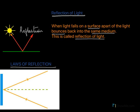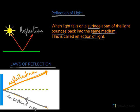The incident ray is the ray that comes in and hits the surface. The ray that reflects back into the same medium is called the reflected ray. The normal is a line drawn at 90 degrees to the surface at the point of incidence.